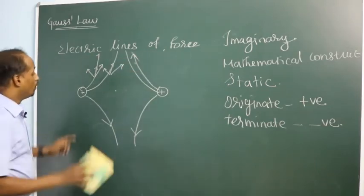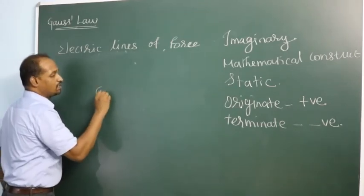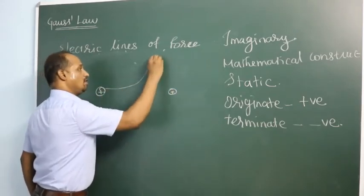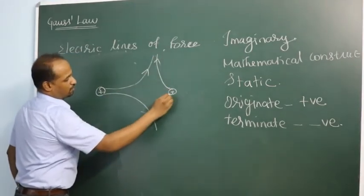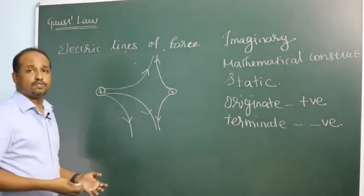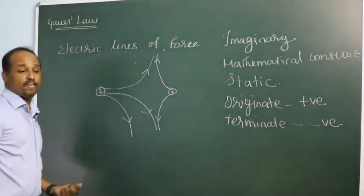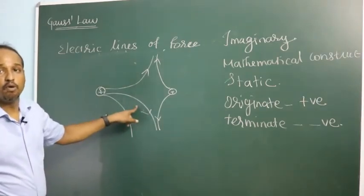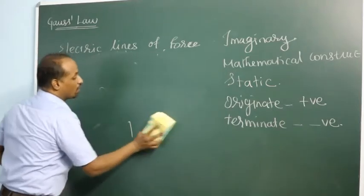What if both charges are not equal in magnitude? Suppose both are positive but one is less positive than the other — then the lines of force will be distributed unevenly. You can draw many lines of force: the more the charge, the more the field, and the more the field, the more the lines of force.